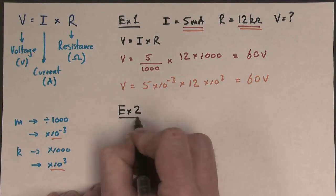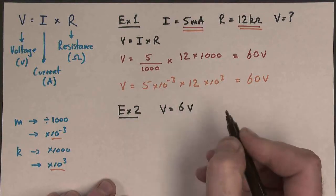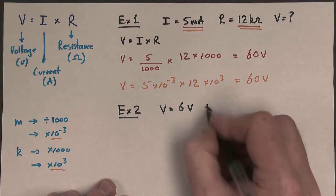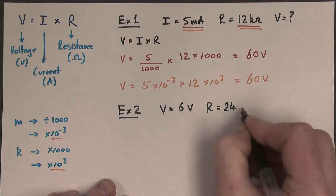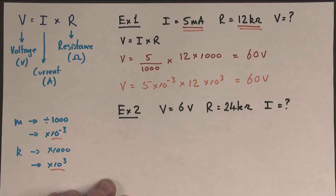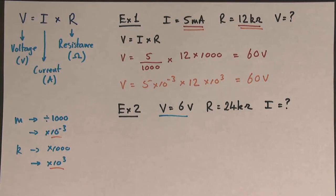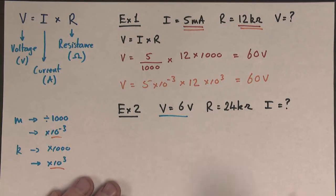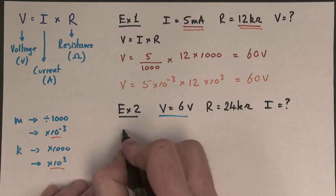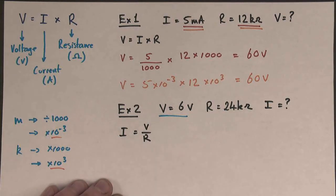Let's do example number 2. In this case, we've got V equals 6 volts, and we've got the resistance is 24 kilo-ohms. And the question is, what is the current? And this looks much simpler because our voltage is already in standard units. It hasn't got any prefixes. But it's slightly complicated by the fact we need to rearrange the equation, but I'm sure we can do that. So we end up with I equals V divided by R.